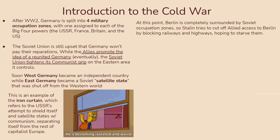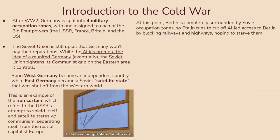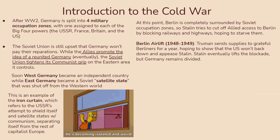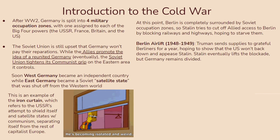The Iron Curtain refers to the Soviet Union's attempt to shield itself and satellite states with communism, separating itself from capitalist Europe. Berlin was completely surrounded by Soviet occupation zones, so Stalin tried to cut off Allied access to Berlin by blocking railways and highways, hoping to starve them. This led to the Berlin Airlift from 1948 to 1949, where President Truman sent supplies to grateful Berliners for a year, showing the US wouldn't back down and appease Stalin. Stalin eventually lifted the blockade, but Germany remained divided.